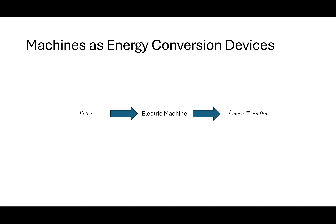I'm showing electrical power as my input and mechanical power as my output. Which direction have I set this up? Is this a motor or is this a generator? Based on the direction of the arrows here, it's a motor — I've got electrical power going in, I've got mechanical power going out. So the mechanical power is always torque times speed.